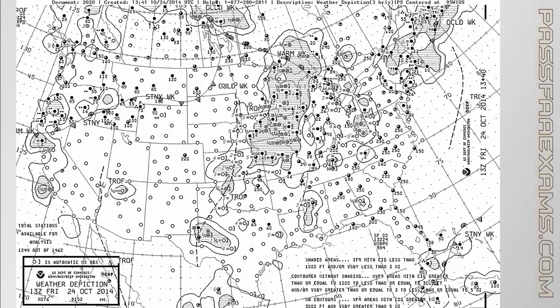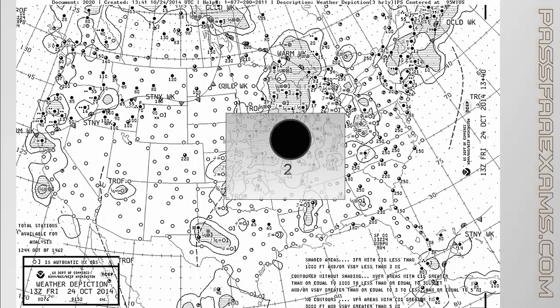Now let's go over the symbols themselves. First we will cover the ones inside the circles — the cloud height symbols — and then we will move to the ones on the side, the visibility symbols. Remember that the numbers shown on all weather charts are always missing two zeros, so you always need to add two zeros to the elevation, meaning a 2 under a ball signifies 200 feet, while a 20 means 2,000 feet.